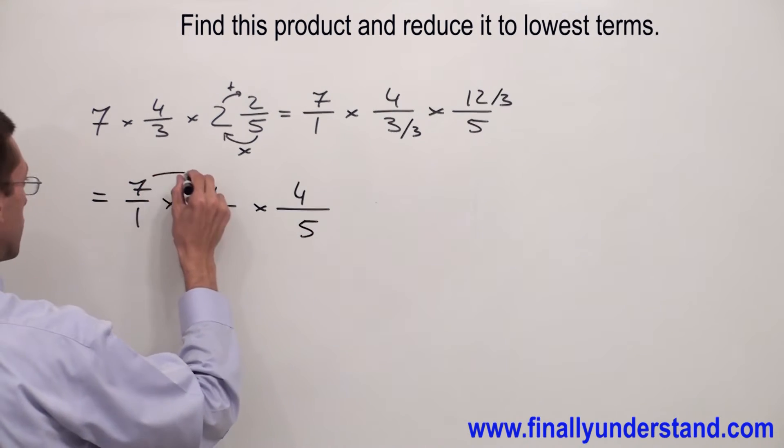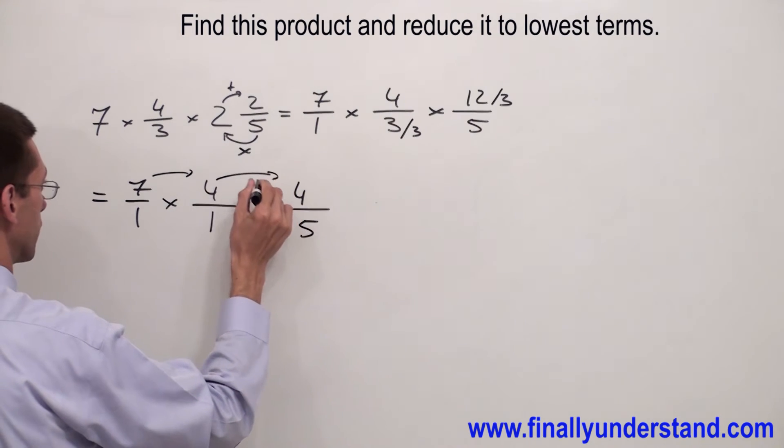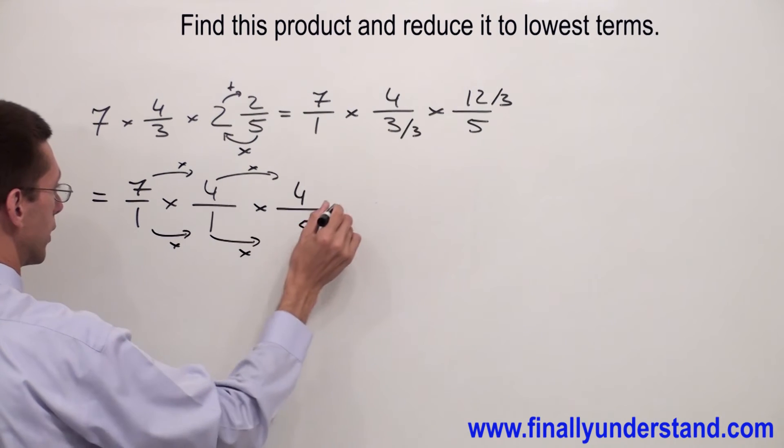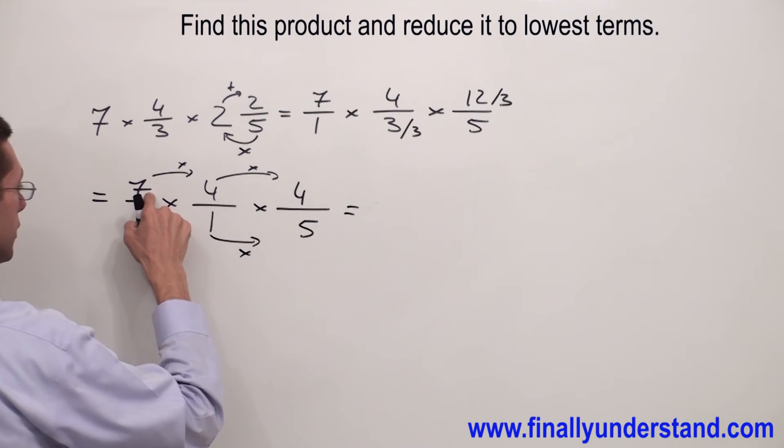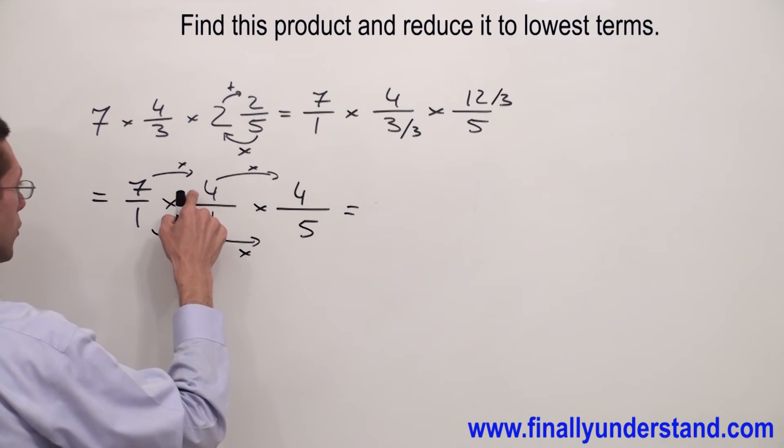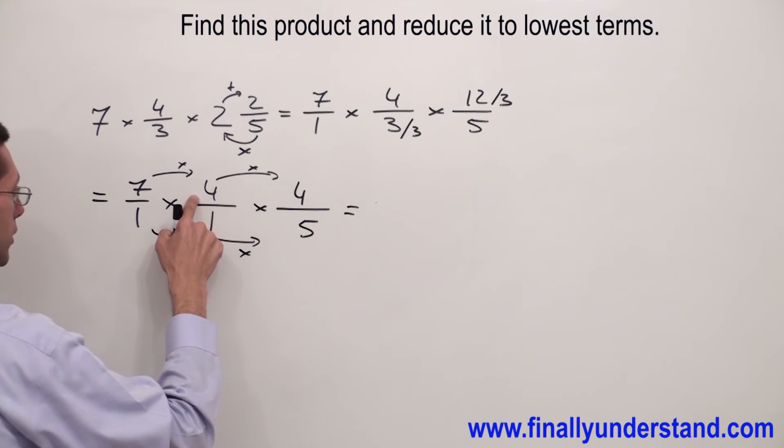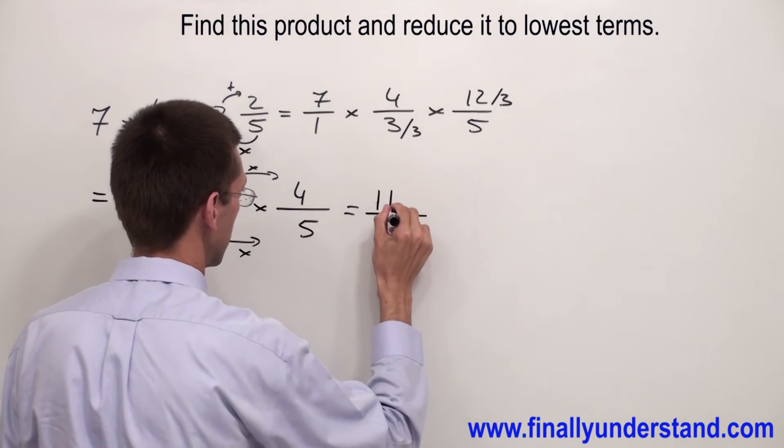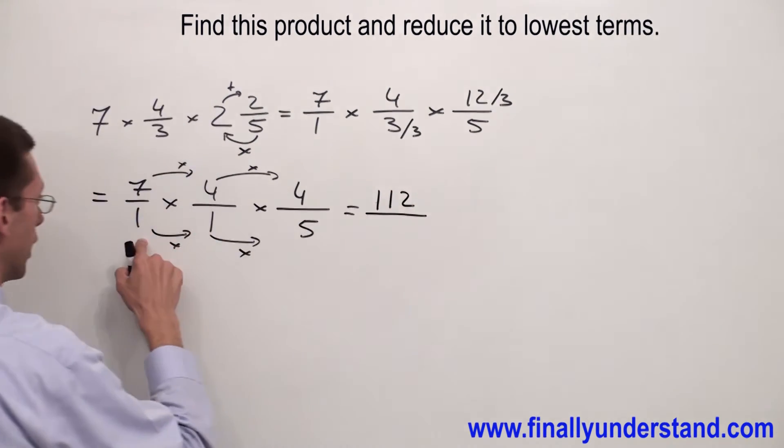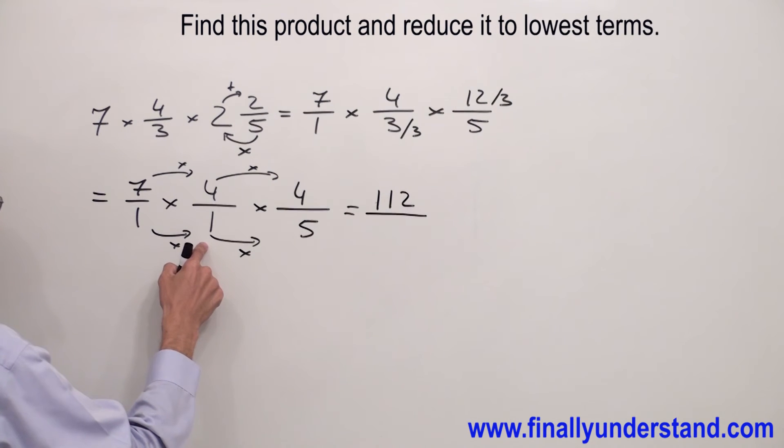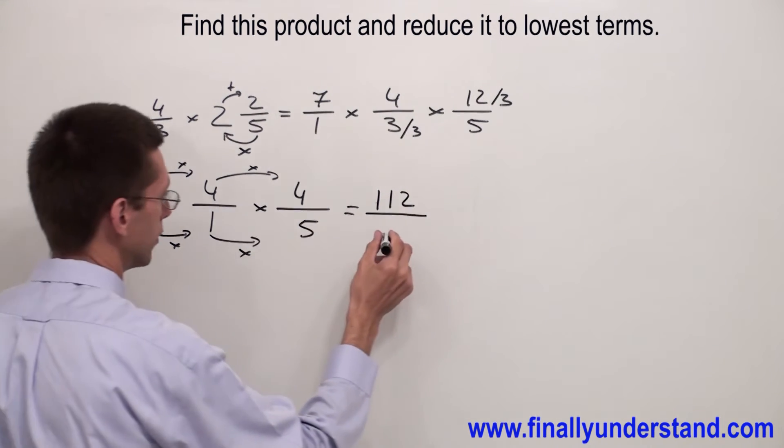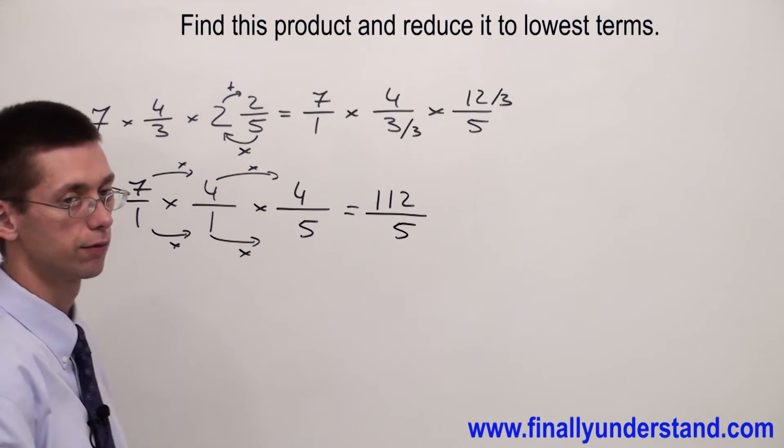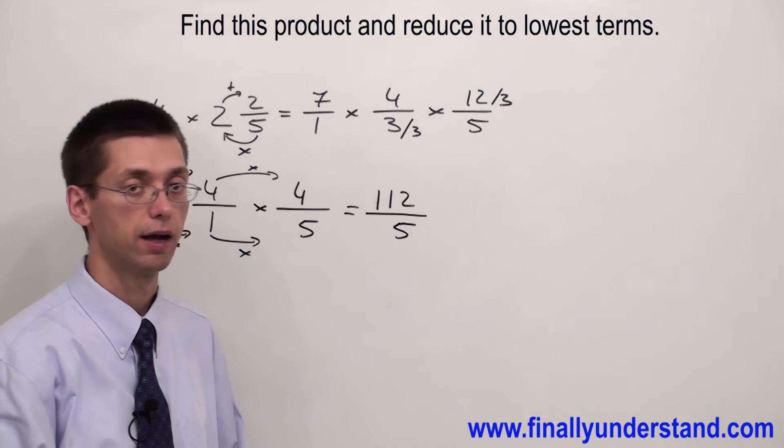So I'm going to simply multiply numerator by numerator and denominator by denominator. 7 times 4 is 28, 28 times 4 is equal 112. 1 times 1 is 1, times 5 is 5. 112 over 5.